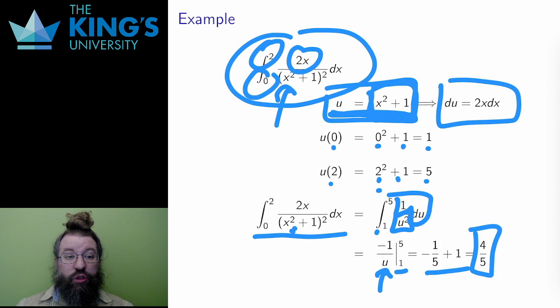One of the nice things about substitution with definite integrals is that I don't have to reverse the substitution. By changing the bounds, I can just evaluate in the new variable with the new bounds. No need to switch back to x.